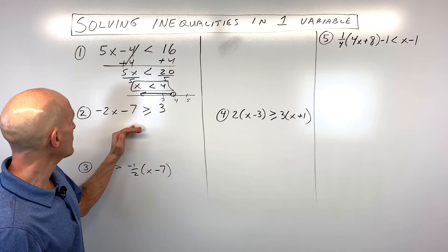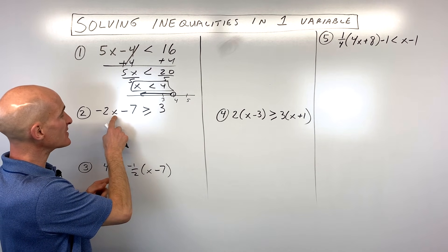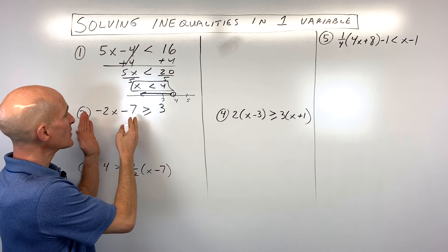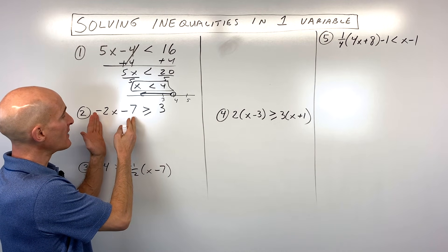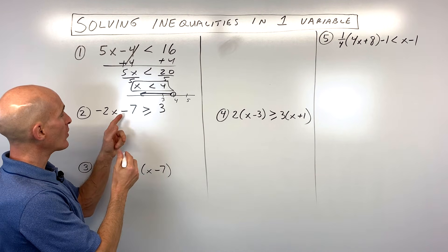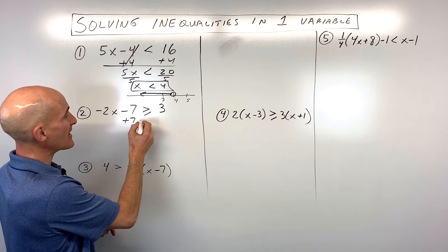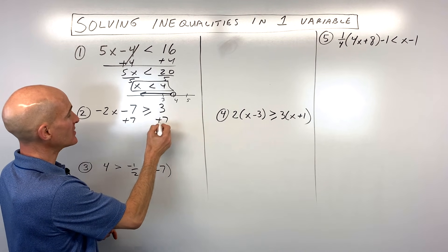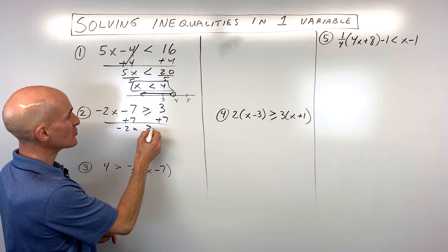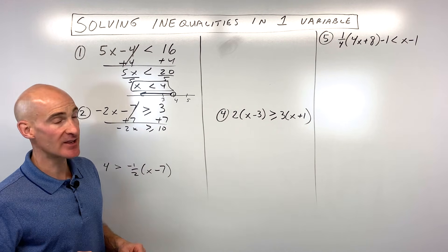Let's try number two — a little bit more challenging. Same idea: we want to get this variable by itself on one side of the inequality, working from the outside in towards that variable. I'm going to add seven to both sides — the opposite of subtracting seven. So now we're down to negative 2x is greater than or equal to 10, because the 7 and negative 7 cancel.